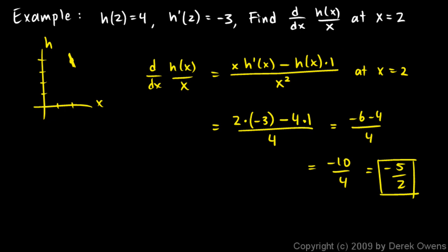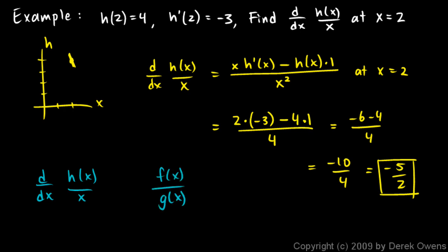When we're doing this derivative of h of x over x, h of x is a function and x is a function, and the quotient rule, as it's derived, is the quotient of one function divided by another. We were told in this case to find the derivative with respect to x of h of x over x — that's just like saying the derivative of f of x over g of x, where both of these are functions of x. x happens to be a simple function, but it's a function. x right here is not a value. In other words, we're not finding the derivative with respect to x of h of x over 2.